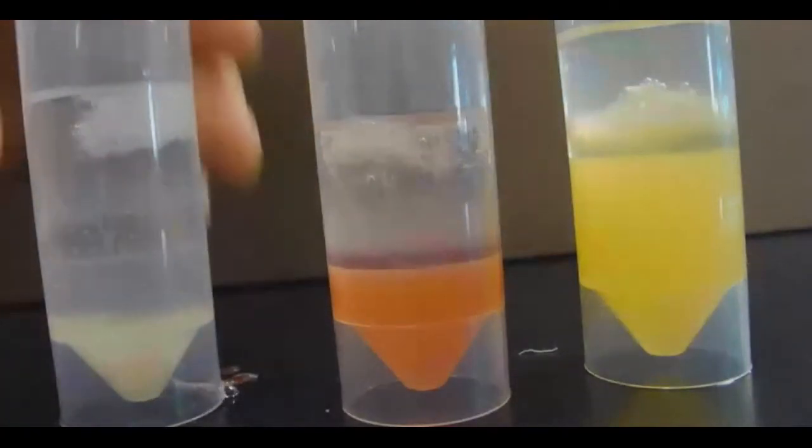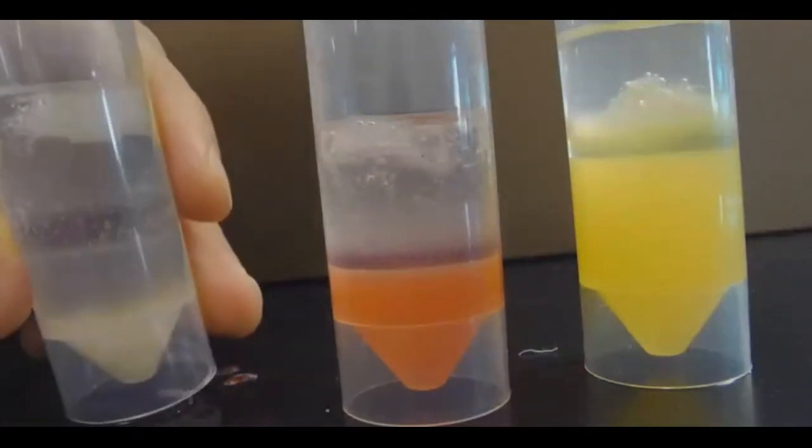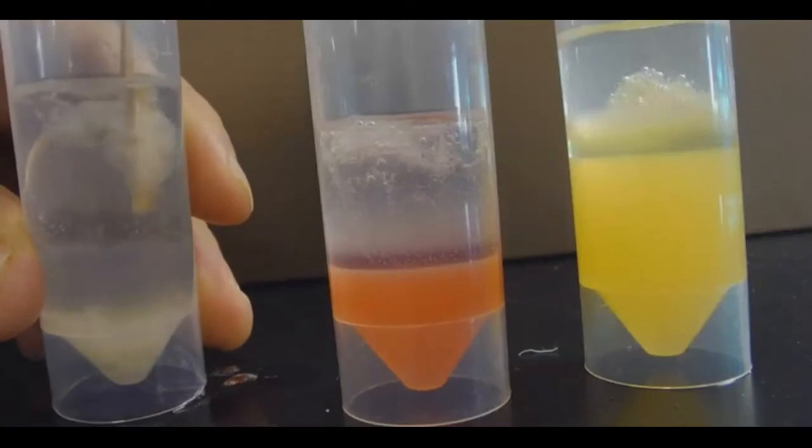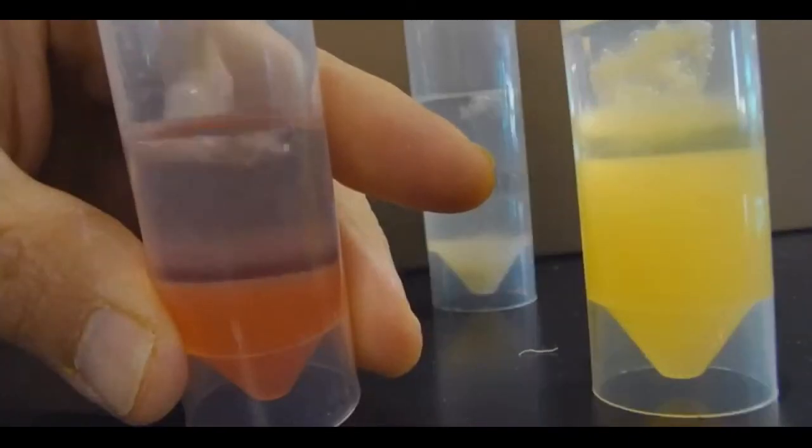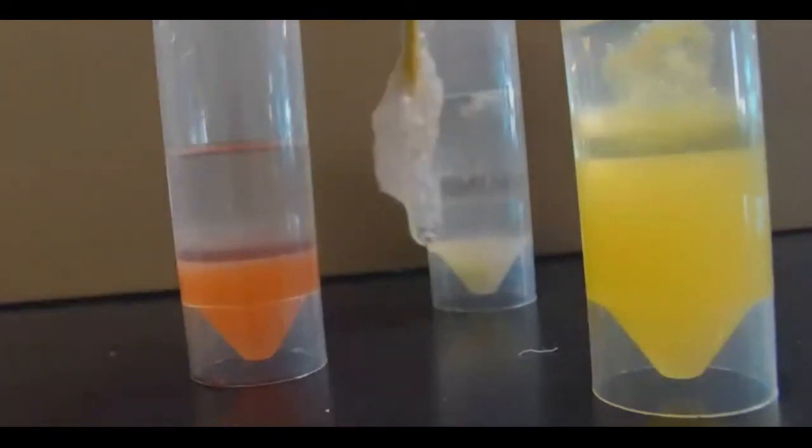Then what you're going to do is take a wooden stick or a popsicle stick and swirl it around and pretend you're making cotton candy until it all wraps around. Then you can take it out and collect it and look at it. And it looks awesome. There you have it. DNA.